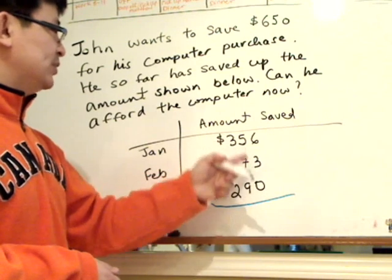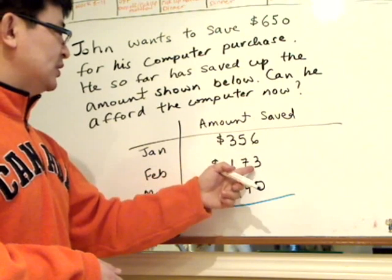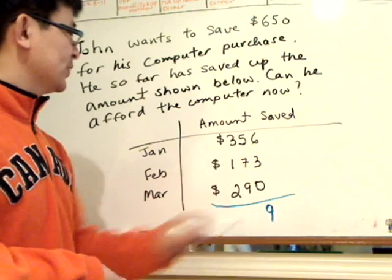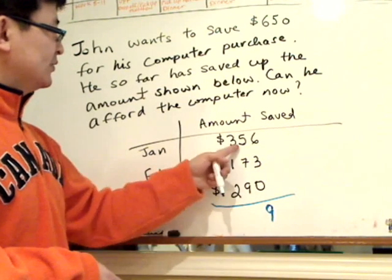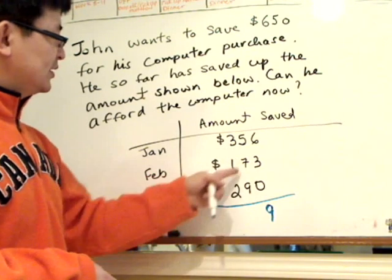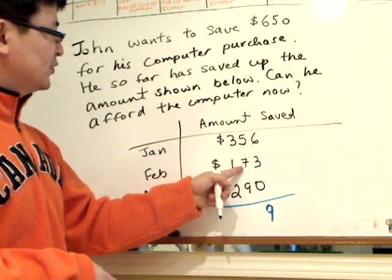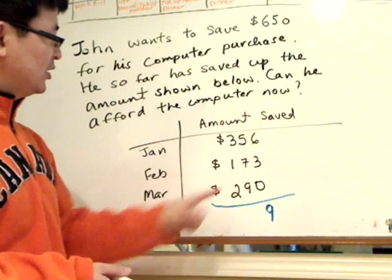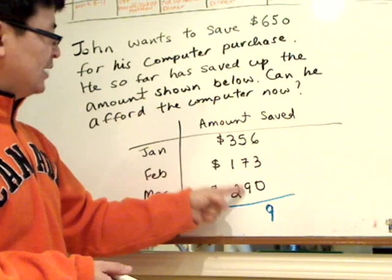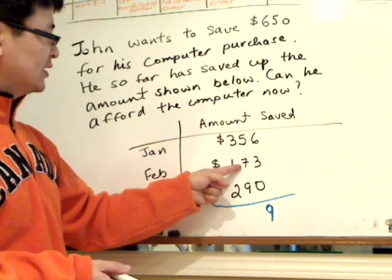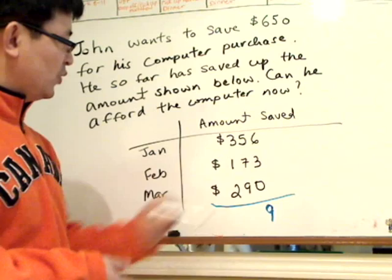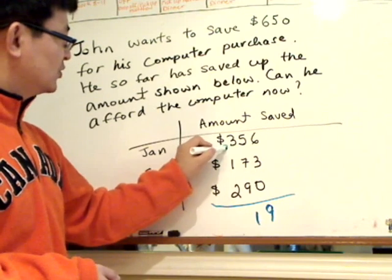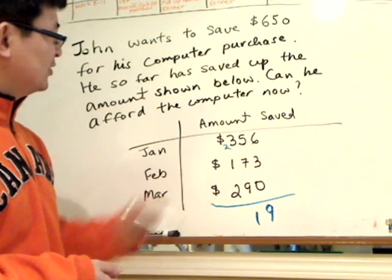So 6 plus 3 is 9, plus 0 is still 9. Then 5 plus 7 plus 9 — I'm going to do 9 plus 7 is 16, plus 5 is 21. Carry the 2 over to the hundreds now.